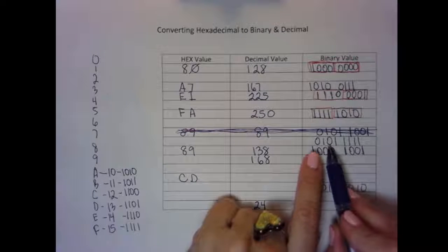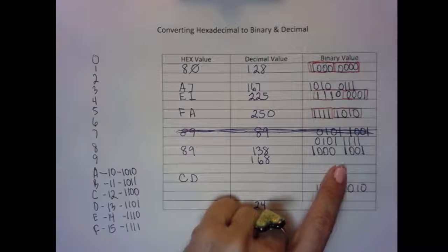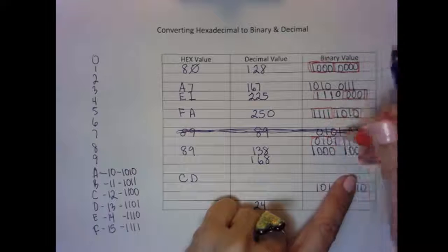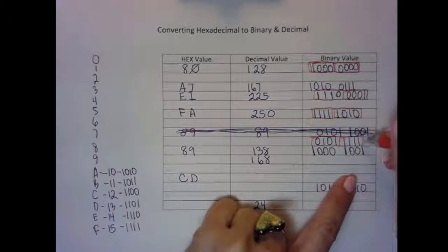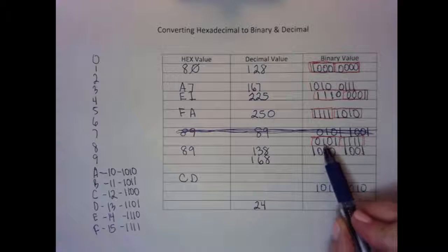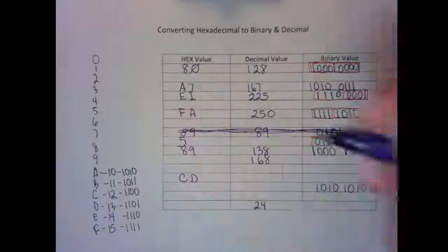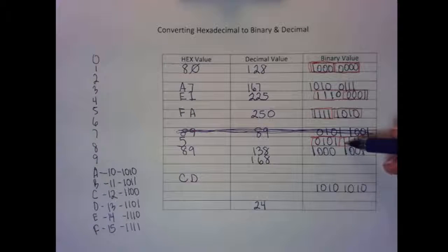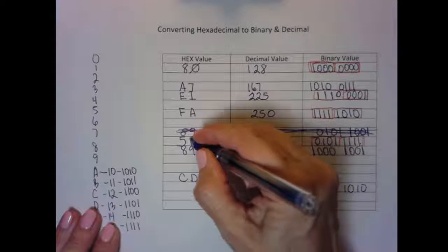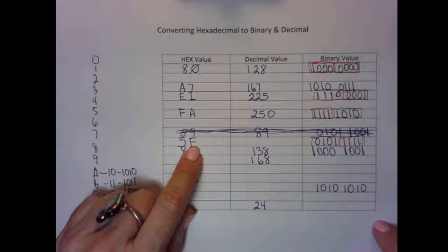Now let's figure out the hex value of the binary number. Looking at these in hex tets: if I have 0101, that's 4 plus 1, which is 5. If I have all of the ones on in the second hex tet, that means I have an F. So the hex value for this binary number is 5F.